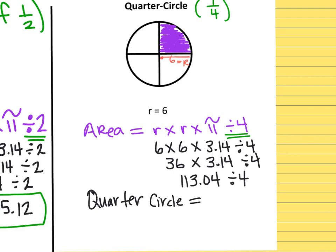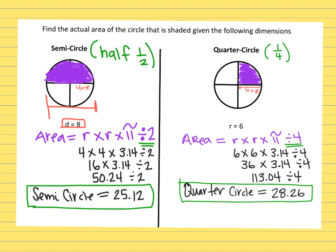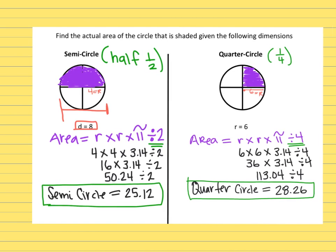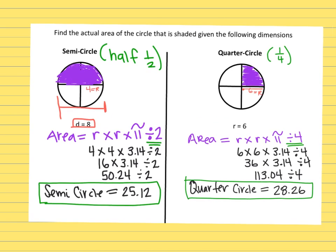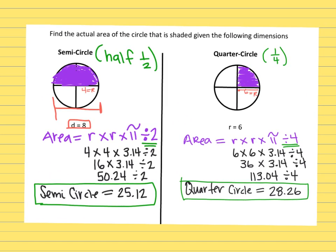113.04 divided by 4 gives us 28.26. This one doesn't have units either, but the final answer for the area of that quarter circle is 28.26 square units. The really important thing to focus on is knowing whether it is a half circle or a quarter circle, and then don't forget to divide by either 2 or 4.